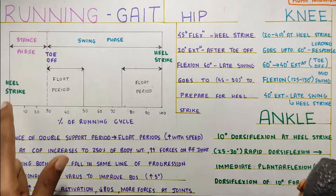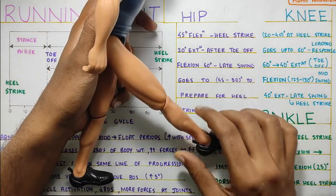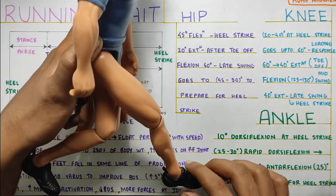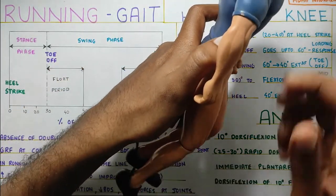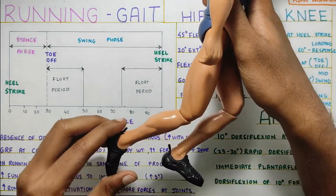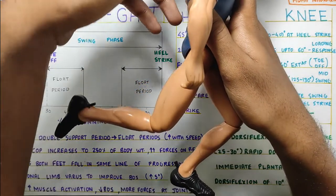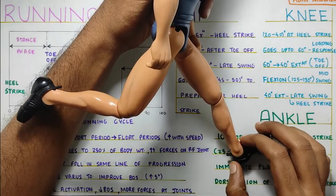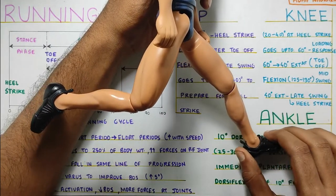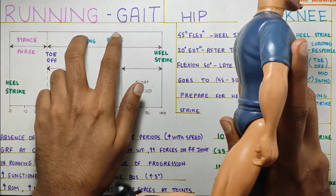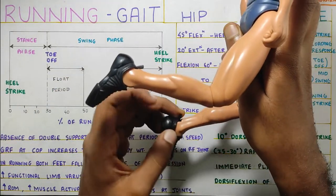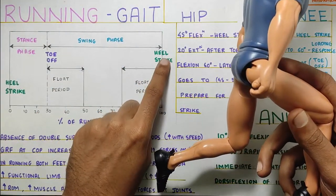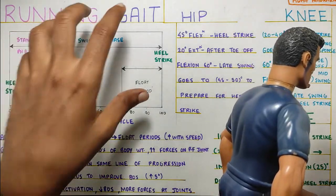To begin, first there will be a heel strike, similar to normal gait. After the heel strike, you push yourself forward, then toe off. Once there is toe off, both legs will be in the air — that is your float period. This is followed by the other leg making contact with the ground, going through the same stance phase. Then again a float period, followed by another heel strike. That's how a whole running gait cycle looks.